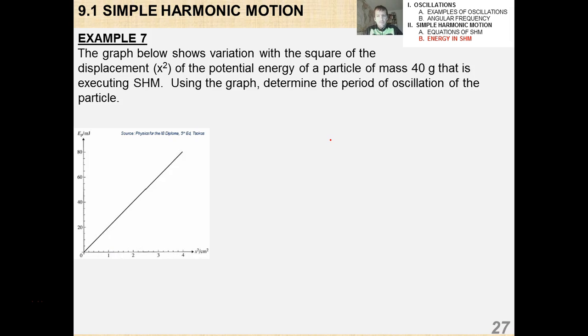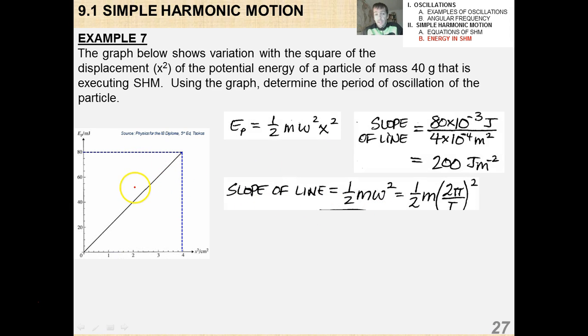Try this example on your own before I do it for you. So the graph shows the variation with the square of the displacement x squared of the potential energy of a particle of mass 40 grams that is executing simple harmonic motion using the graph to determine the period of oscillation of the particle. This is an example of what you will have to do in this class. Now probably you sense that the slope of the line will be important. Now this is E, the potential energy graph against x squared. So obviously the slope of the line is going to be all this junk right here.